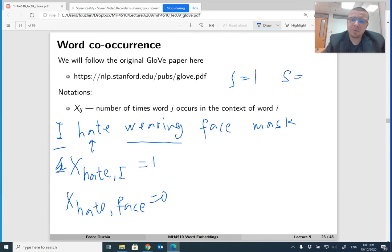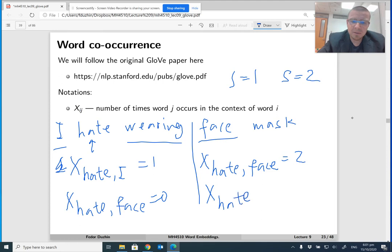But if we change the window size to 2, then what are words that are at most two words apart from hate? It's still I, it's still wearing, and face is also going to be added. So it means that now if I'm looking at s equals 2, then x hate,face is going to be 1, but x hate,mask is going to be 0.